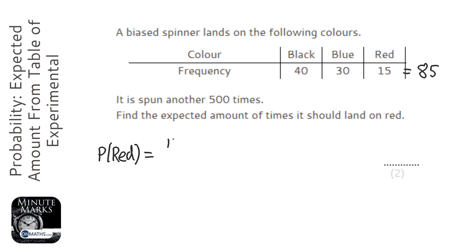Now it lands on red 15 times and we've spun it 85 times. So the experimental probability is 15 over 85.